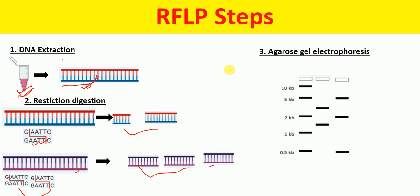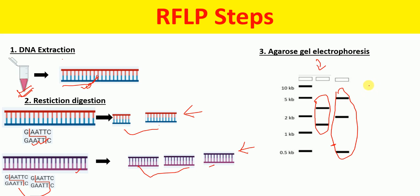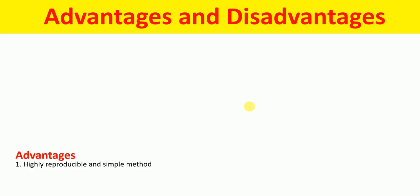The next step is agarose gel electrophoresis. We load the restriction digest into the gel and run the electrophoresis. As shown, the first sample gives two fragments and the second gives three fragments. We also load positive controls — for instance, a positive control showing three fragments from one person and another showing two fragments from another person — allowing us to identify which DNA sample belongs to which individual.